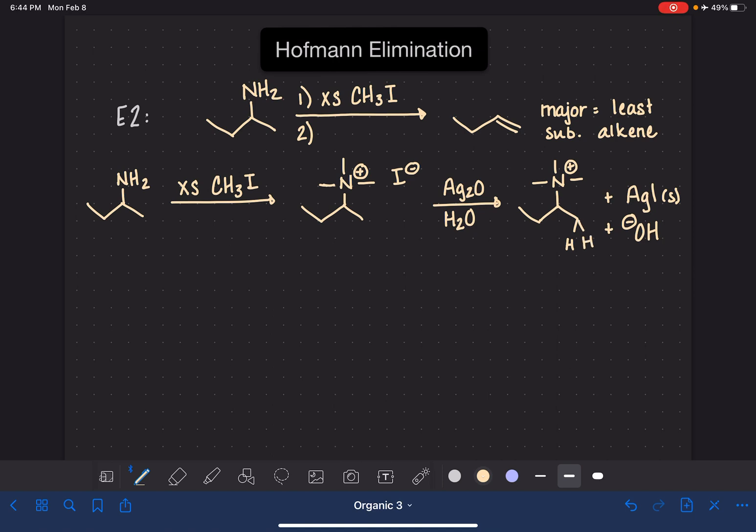So the hydroxide ion then is going to come in, and it's going to grab a hydrogen from the correct position to give us the least substituted alkene, so out here on the end. The carbon-hydrogen electrons are going to come in to make the double bond, and then we will kick off the leaving group, which for this molecule is N(CH3)3. I'm going to go ahead and write that leaving group, even though normally we wouldn't show that.